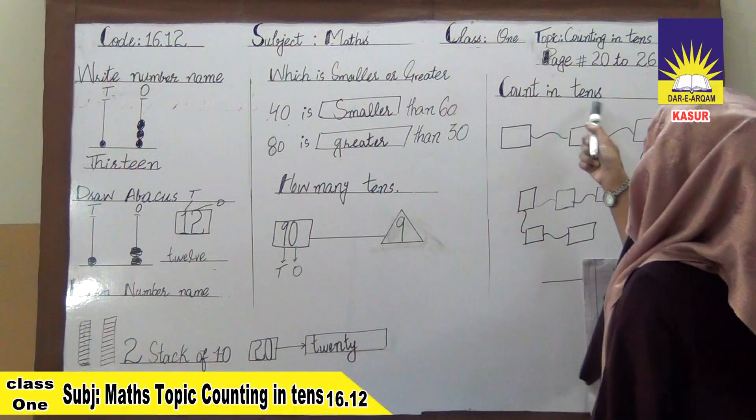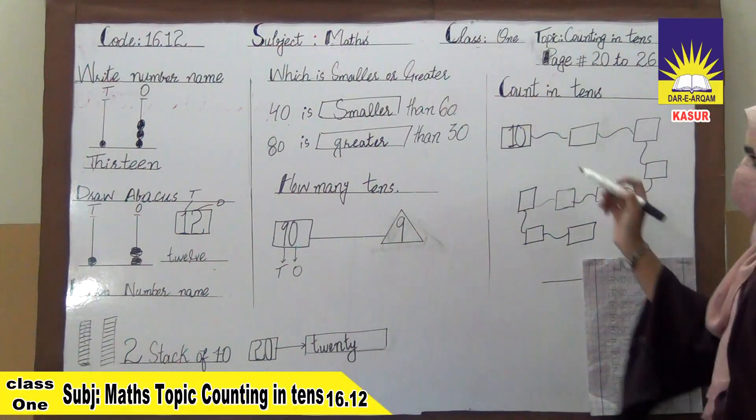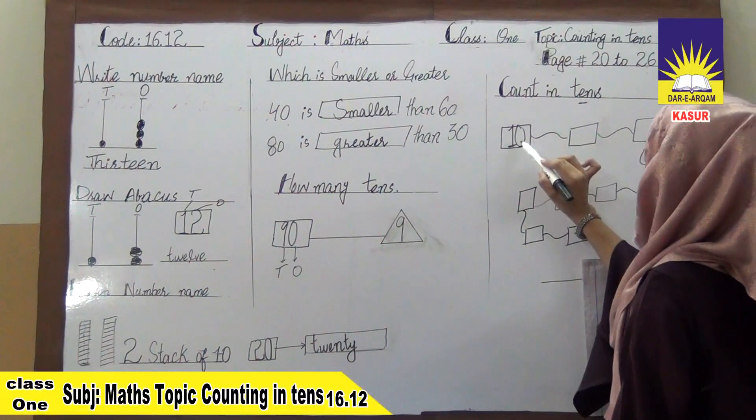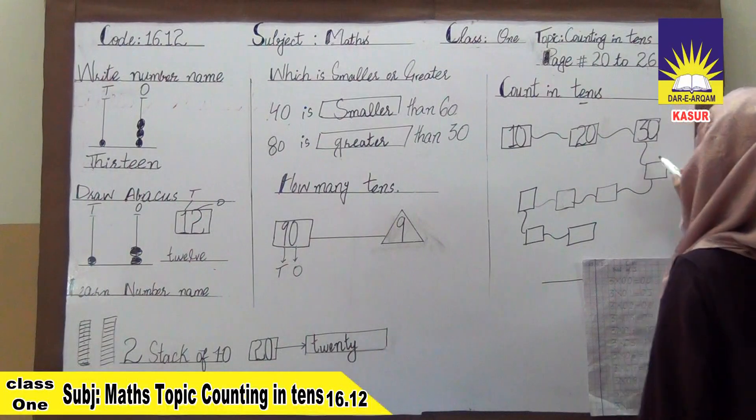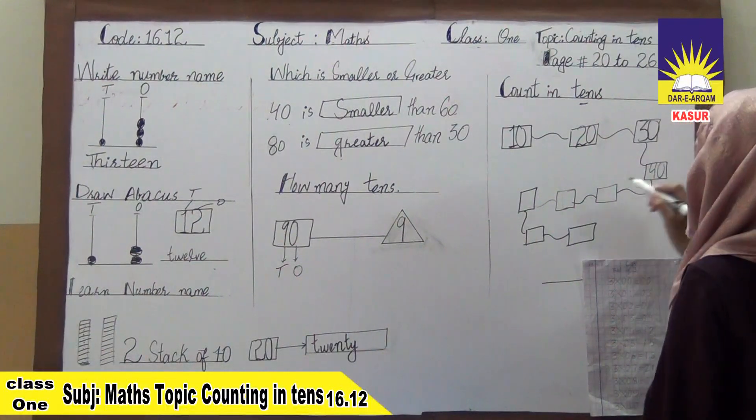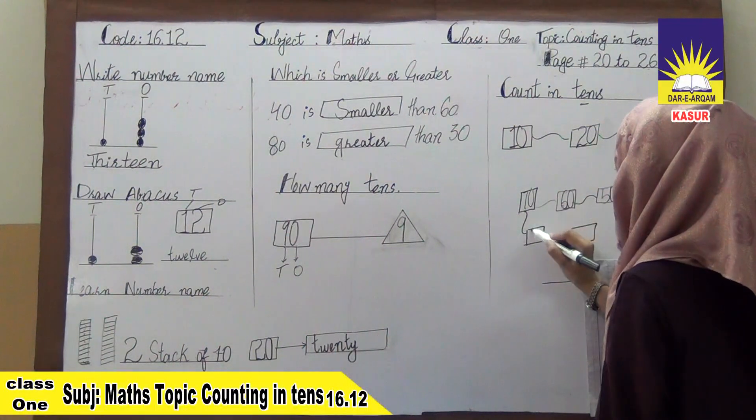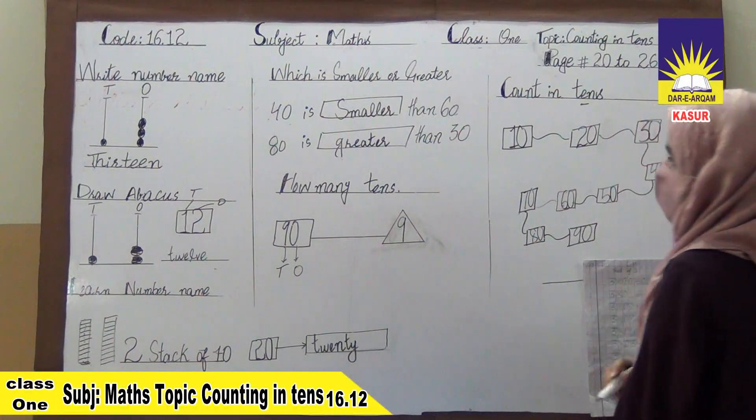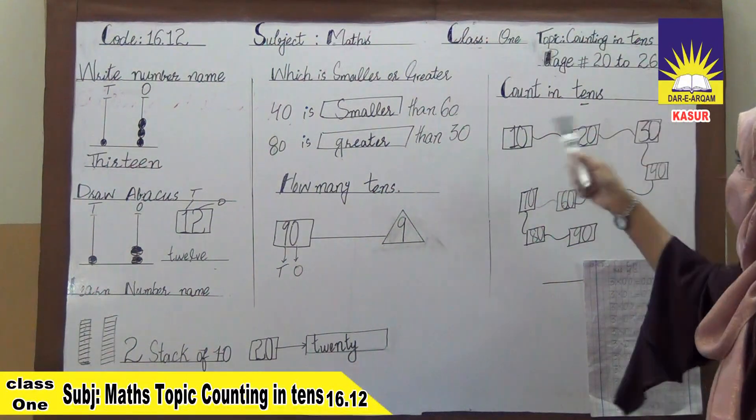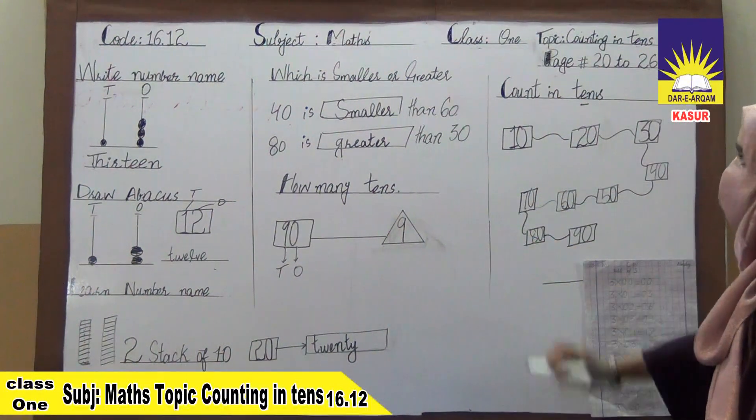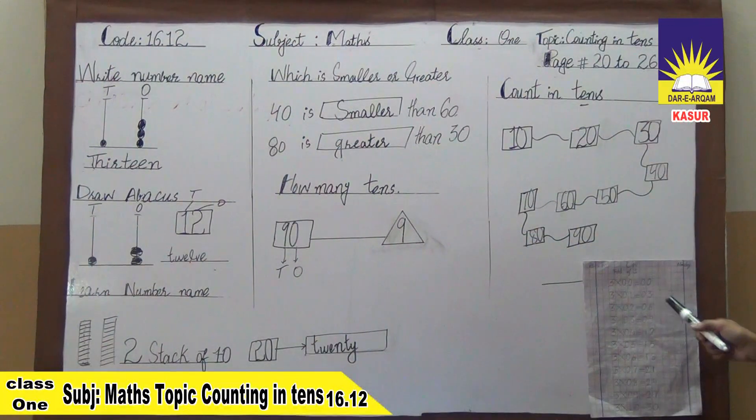Now, our next question is counting tens. The first number is given 10. Count means counting. We can now complete this page and we can write it. We can also write the table of three. Here, the table of three is written.